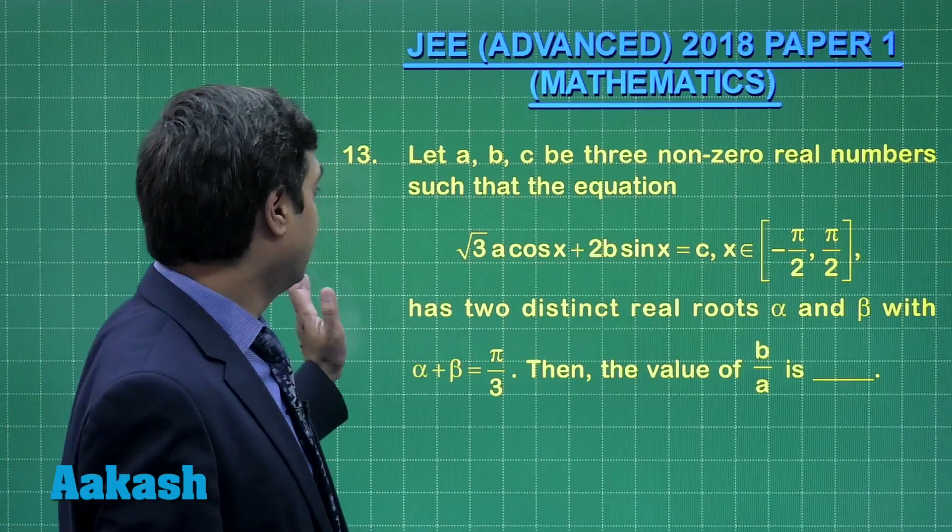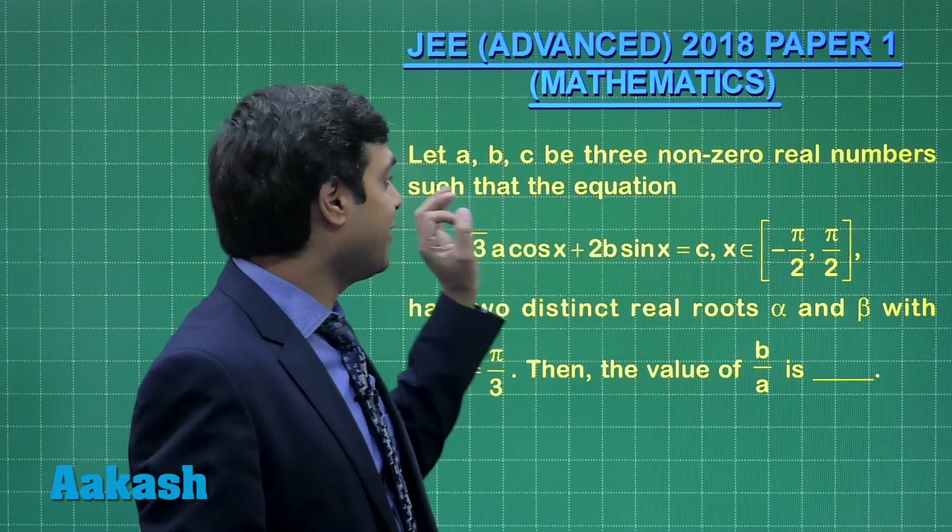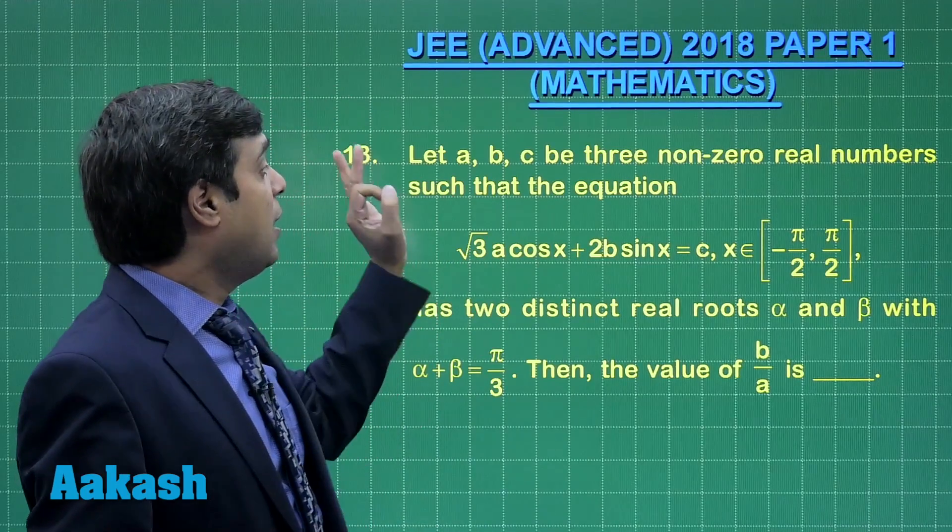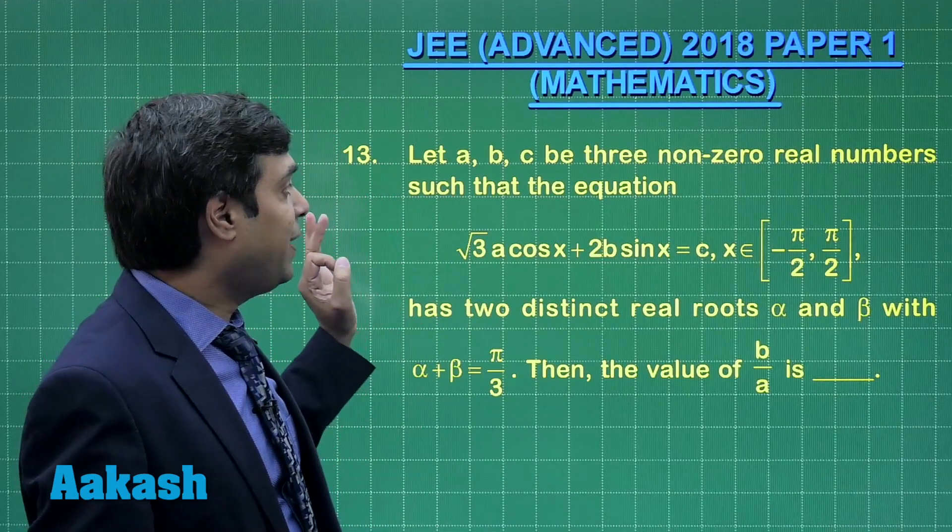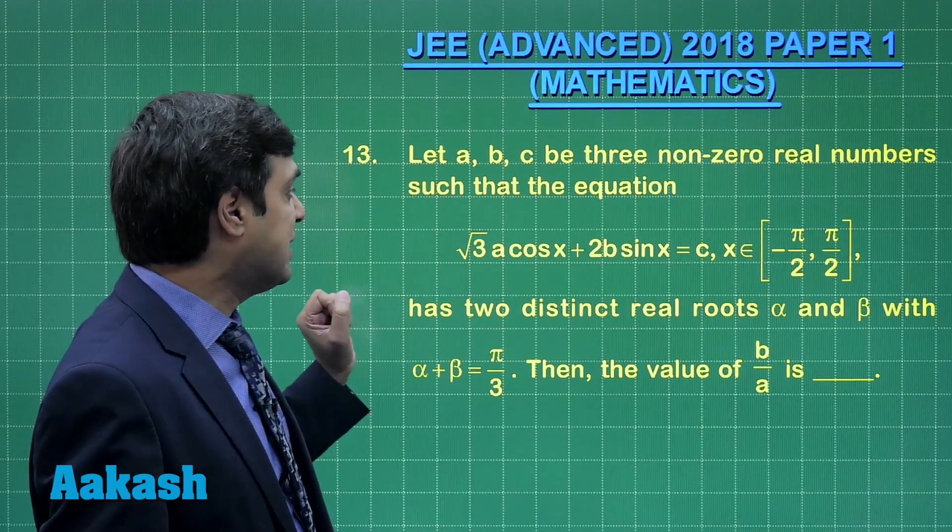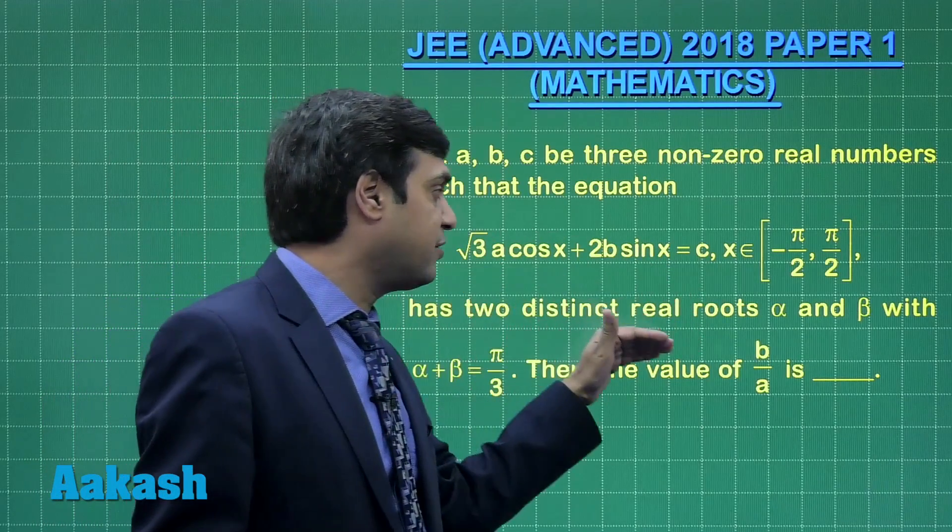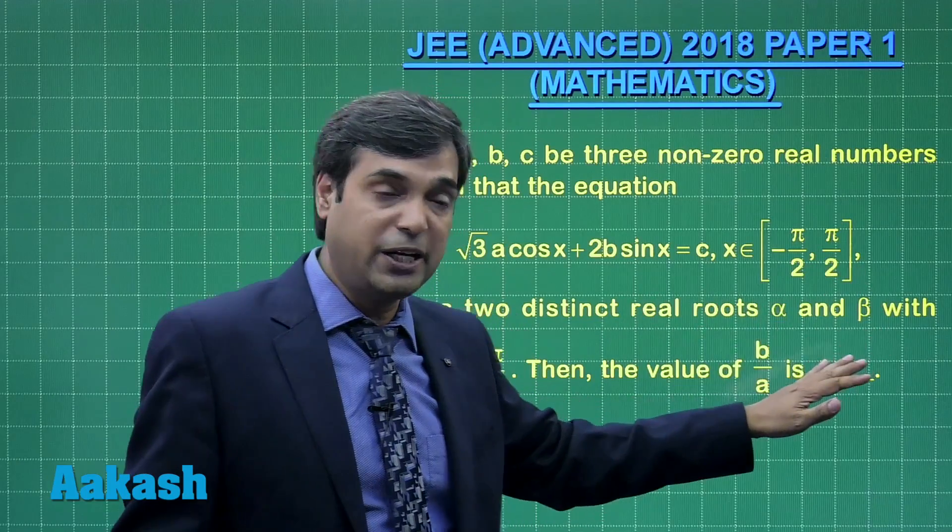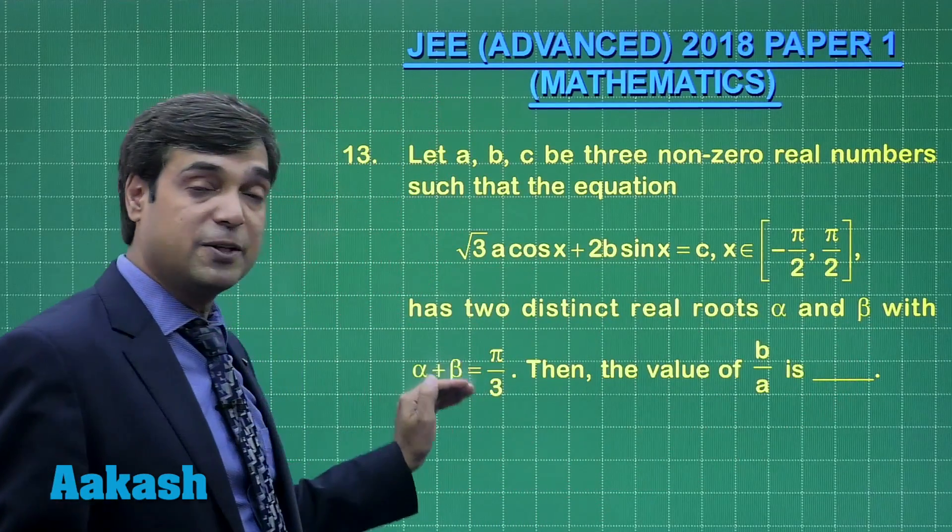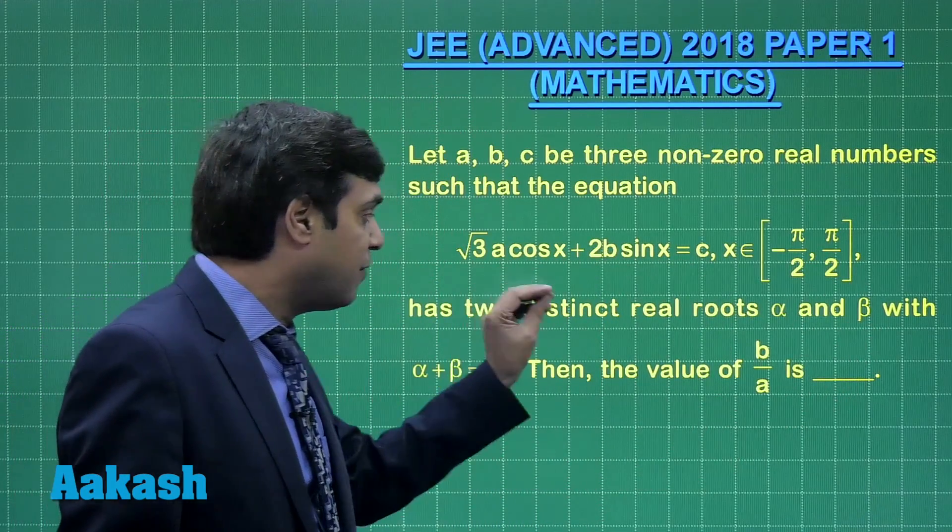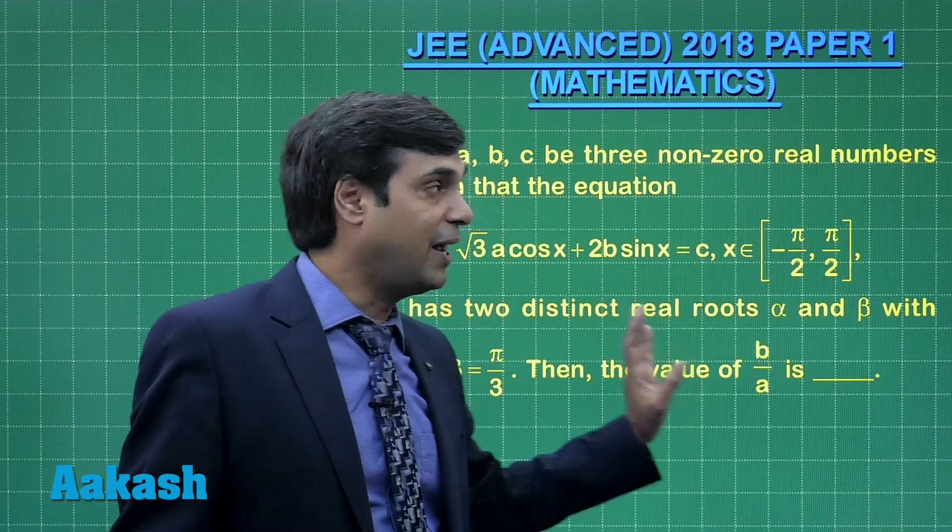Now take question number 13, which is from trigonometry, specifically trigonometric equations. Let A, B, C be three non-zero real numbers such that the given equation has two distinct real roots α and β with α + β = π/3. Then find the value of B/A.